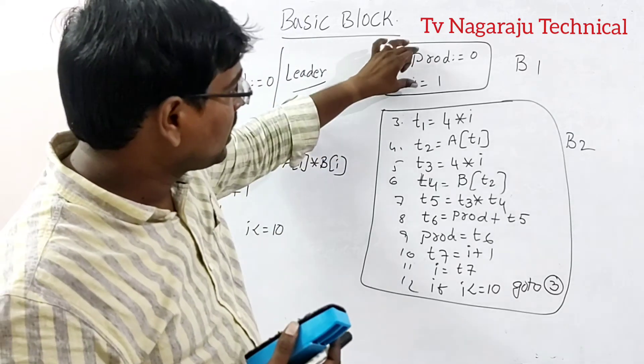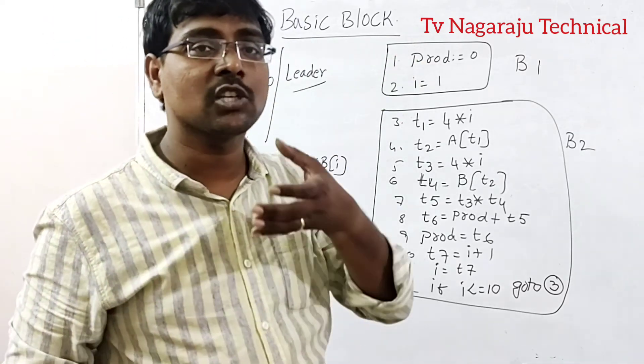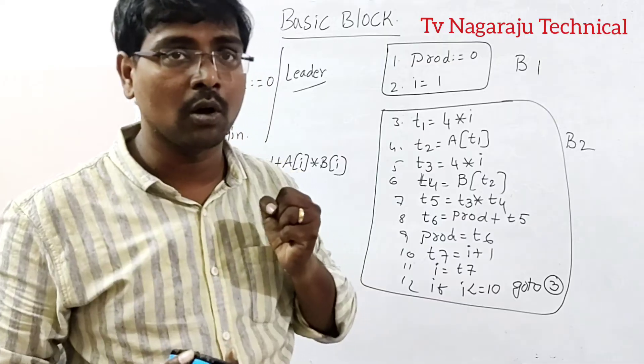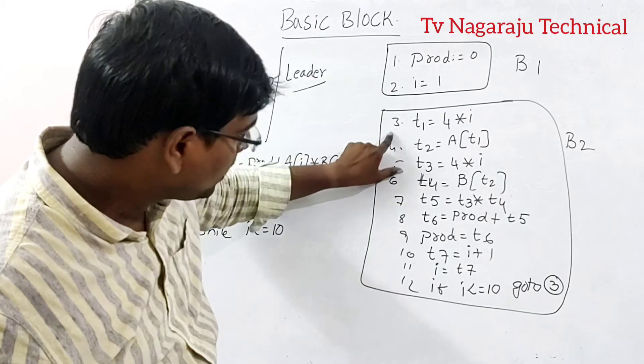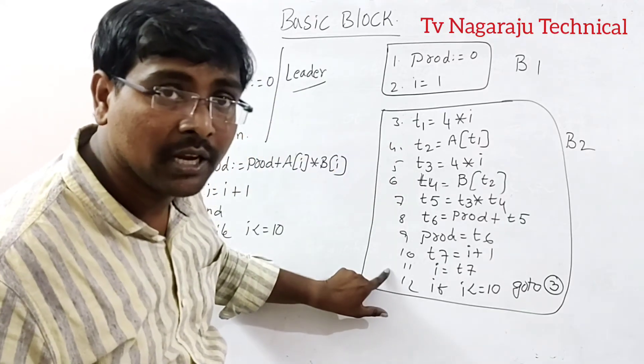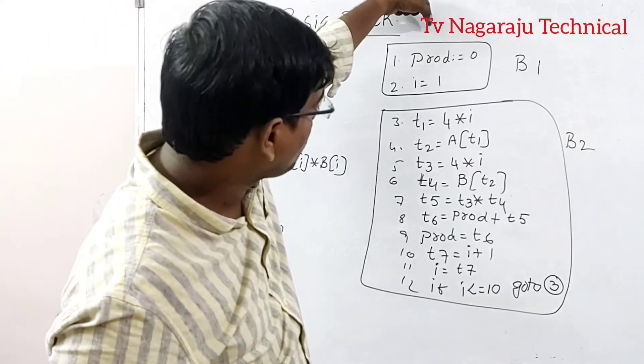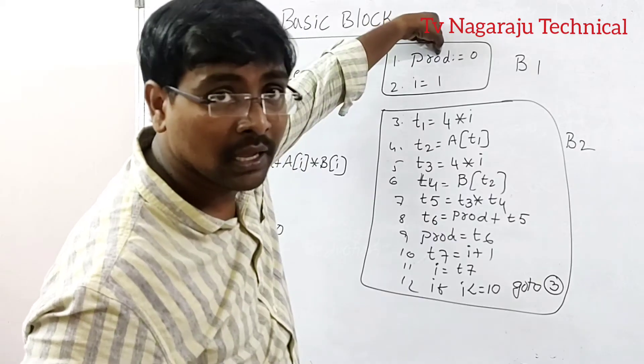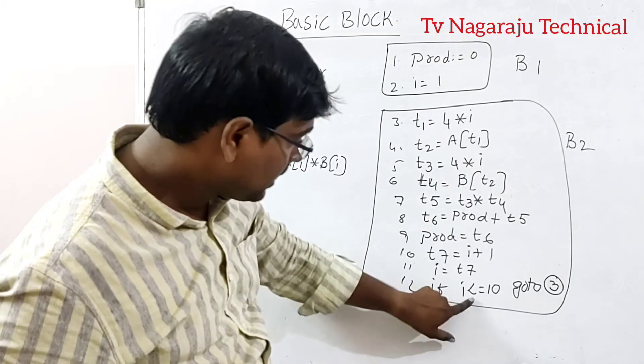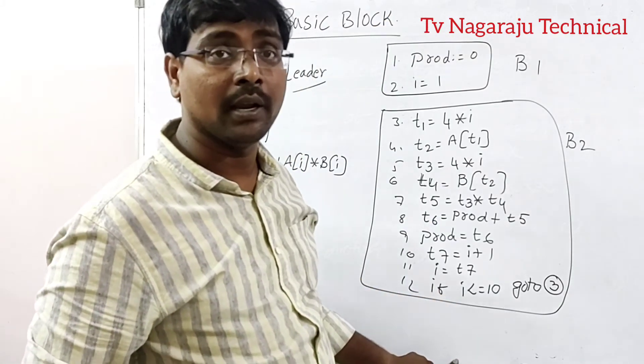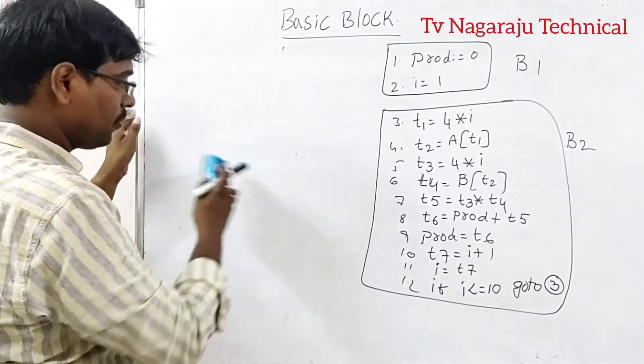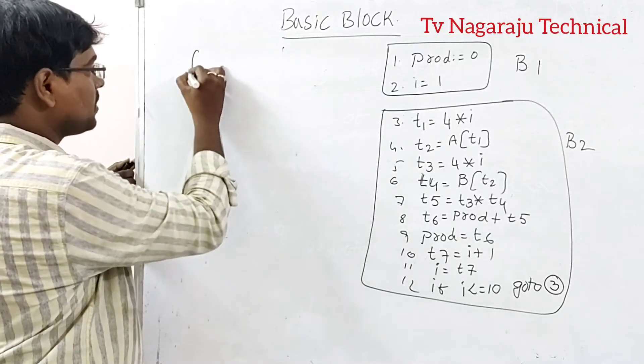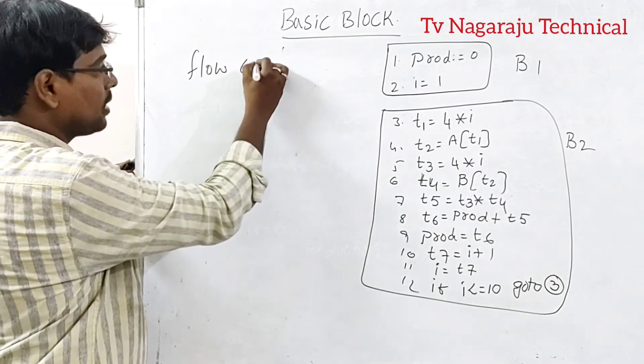Identify the leader. Leader specifies the starting point of the block. The starting point of the block. Now block is simply a sequence of statements. The flow of control enters at one statement and ends at another statement. That is represented as flow graph. The name specifies flow graph.